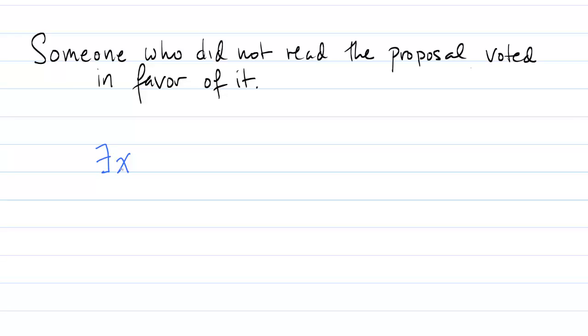So we want the conjunction of these two expressions. First one is they did not read the proposal so not R of x, and that person voted in favor of it.